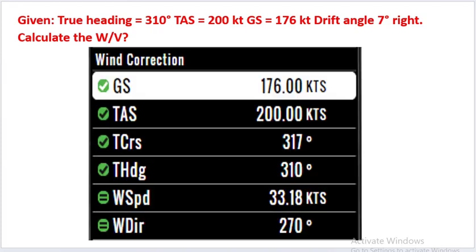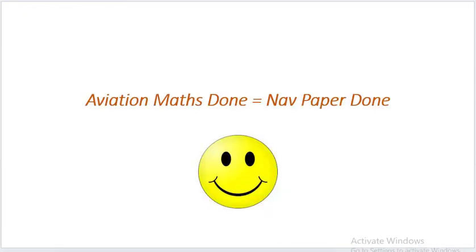So with that, we need to fill in these values and you will get the answer as 270 degrees as wind direction and 33.18 knots as the wind speed. Thank you for watching the video.